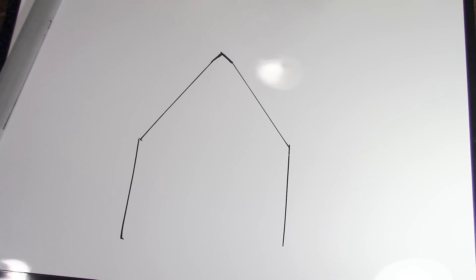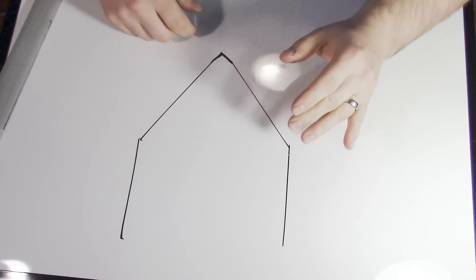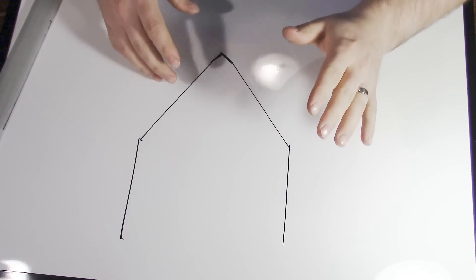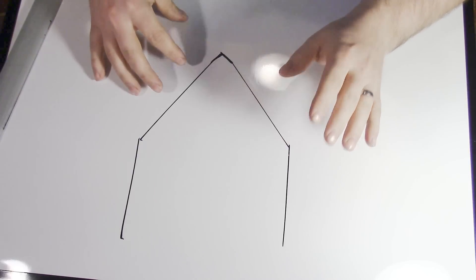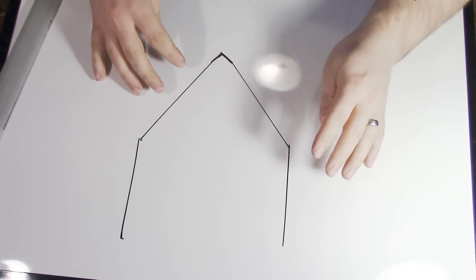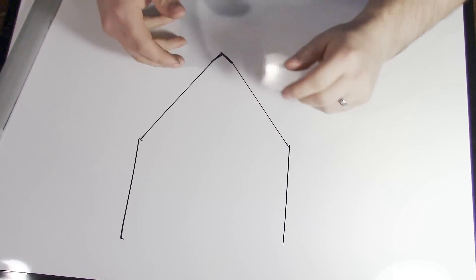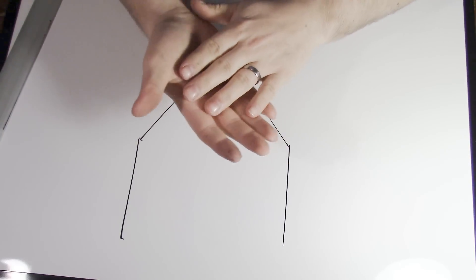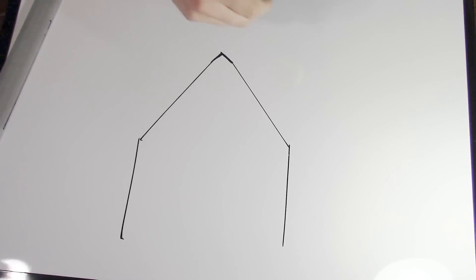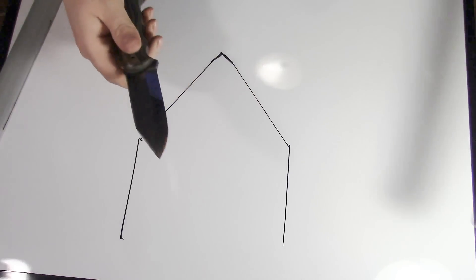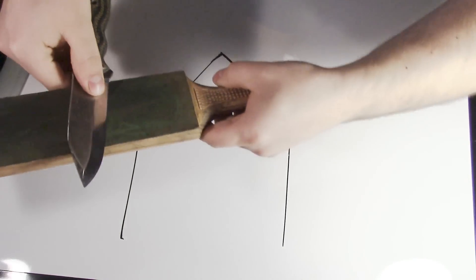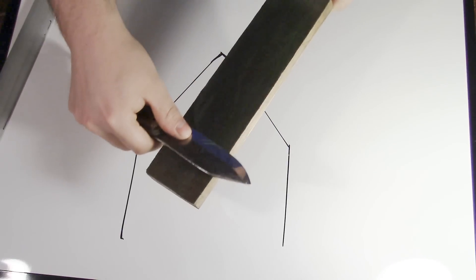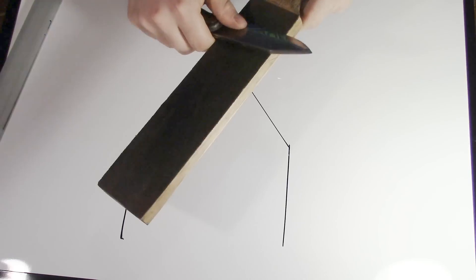So basically what I'm saying in this video is to keep your Scandi a true Scandi, you want to sharpen it on a perfectly flat stone all the time. And if you're stropping, make sure you strop your Scandi with the full bevel laid directly on your strop, no increase in angle whatsoever.